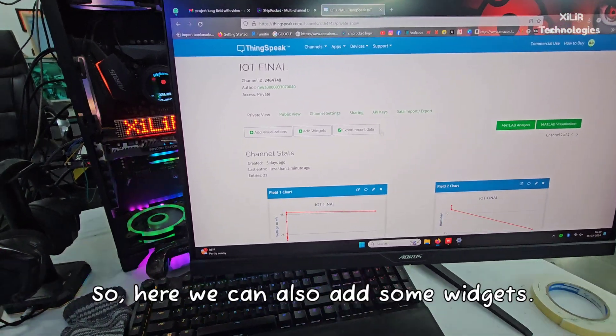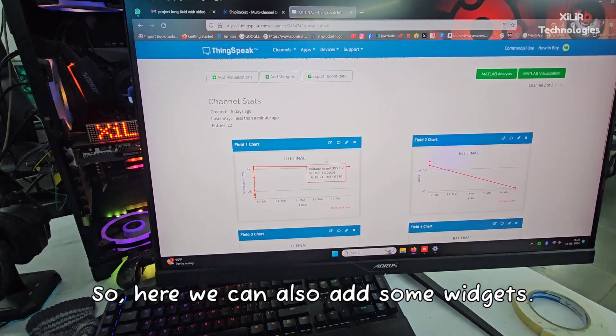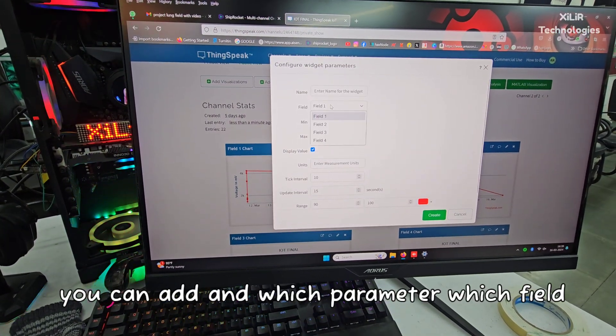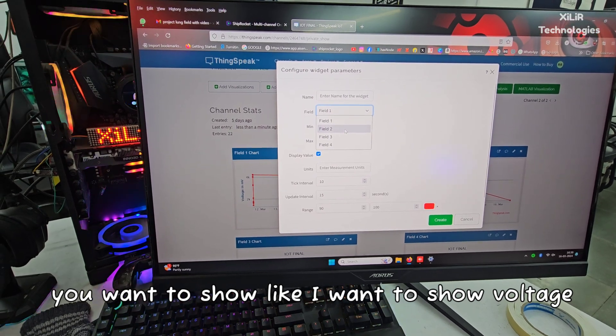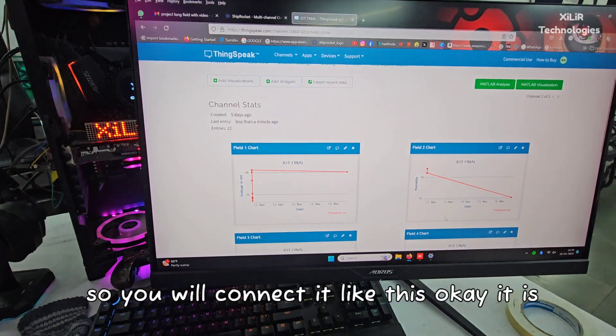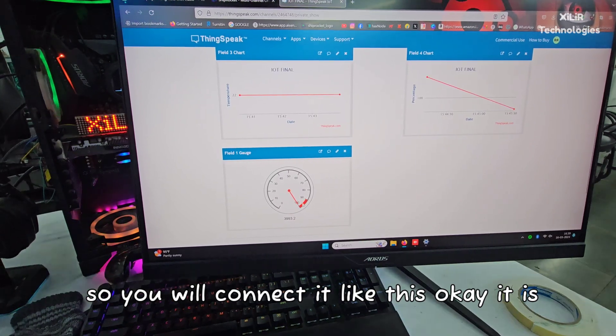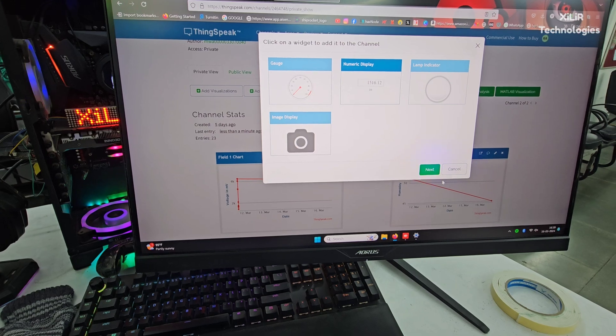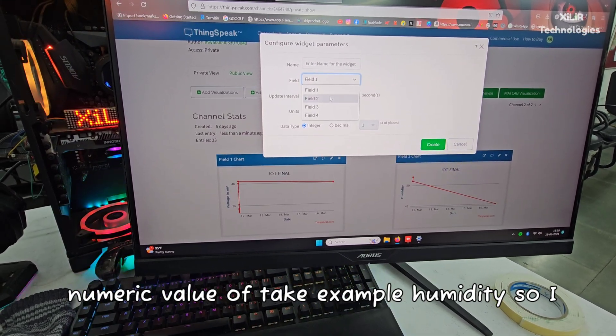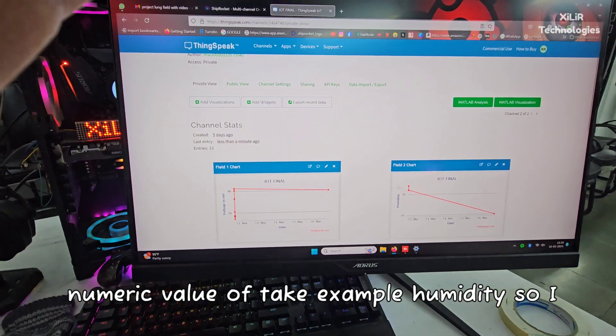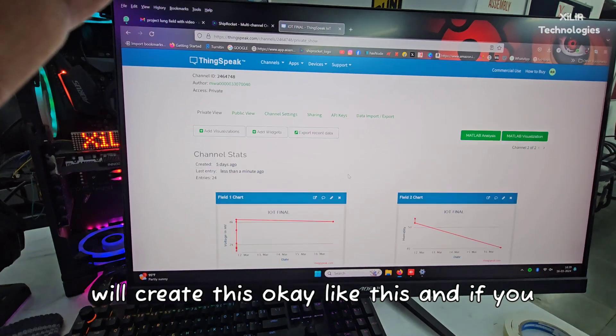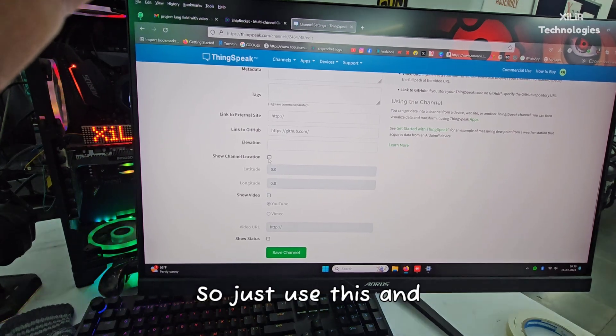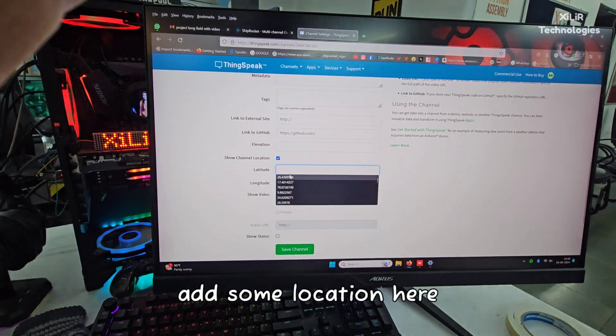We can also add some widgets. Like I am adding this gauge meter and selecting which parameter or field you want to show. I want to show voltage, so you will connect it like this. It is showing 4000 millivolts. Then I want to add some numeric value, for example humidity, so I will add this.